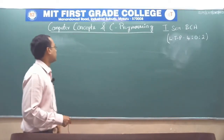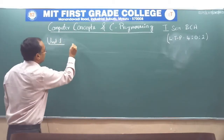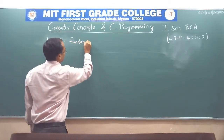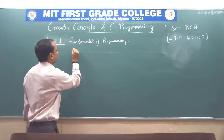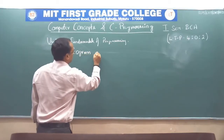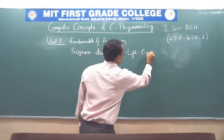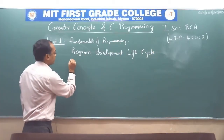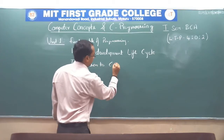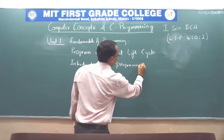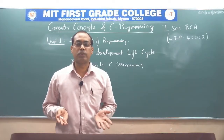Now let us see the syllabus structure. The syllabus is divided into four units. In unit one, you will be introduced to the fundamentals of programming, in which you will learn the program development life cycle and be introduced to the concepts of C programming, in which you will learn operators, data types, variables, the tokens which are nothing but the building blocks of C programming, etc.